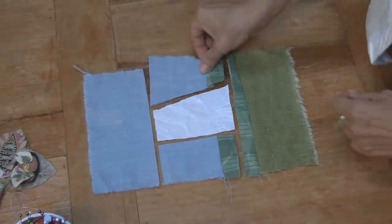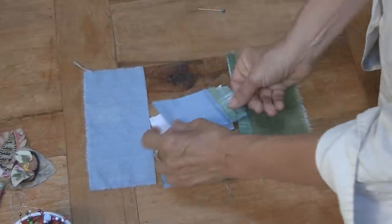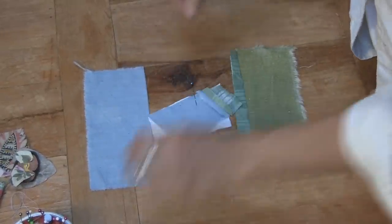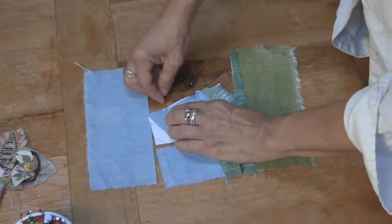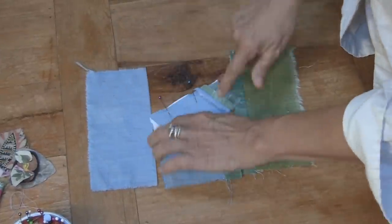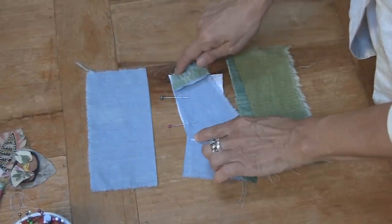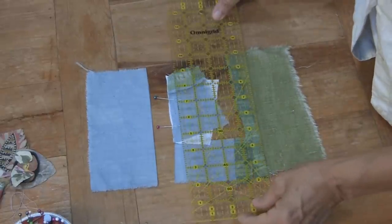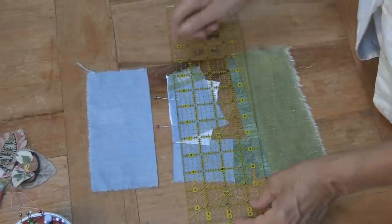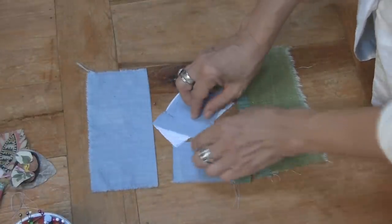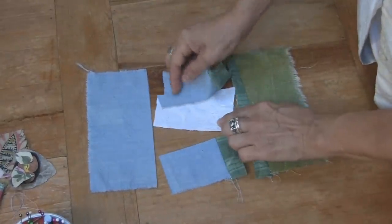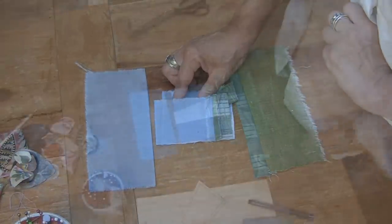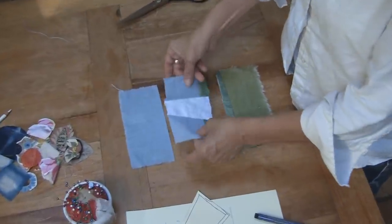So all you're going to do is flip this over, right sides together, pin it. And now you'll either hand sew or machine sew that seam. Now if you're hand sewing and you're nervous about sewing straight, you can take your straight edge and draw yourself a line before you sew. And after that one's sewn, you're going to do the same thing with this edge.